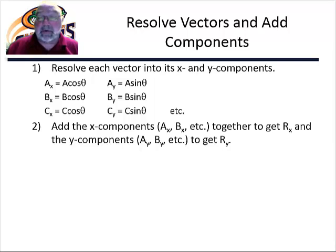The next step is you add the x components together. The x component of A plus the x component of B plus the x component of C and so on for as many vectors as you are adding together. And that gives you the x component of the resultant. The next step is to add together the y components. Y component of A plus y component of B plus y component of C and so on. And that gets you the resultant's y component.